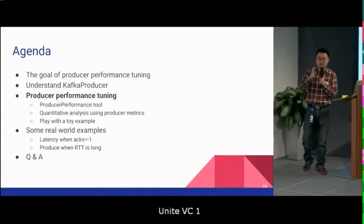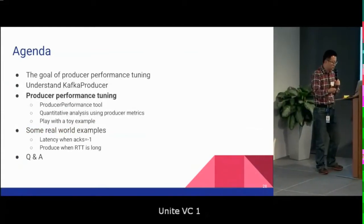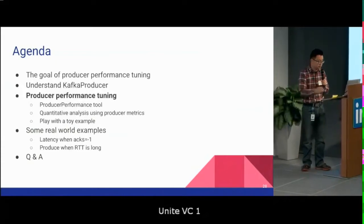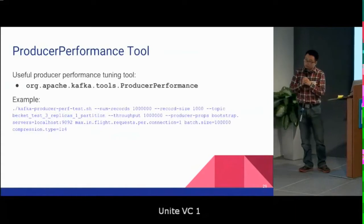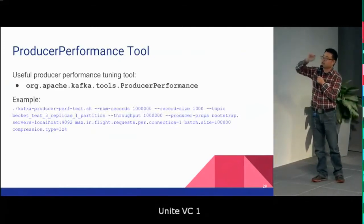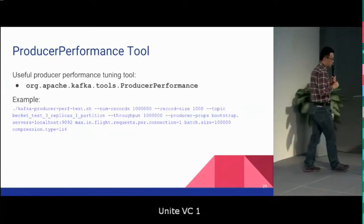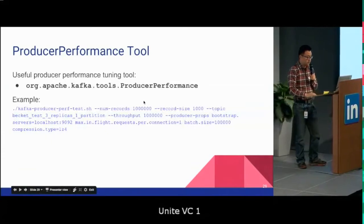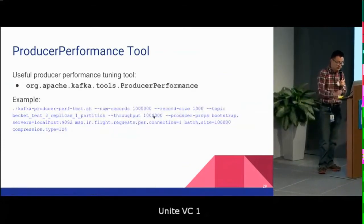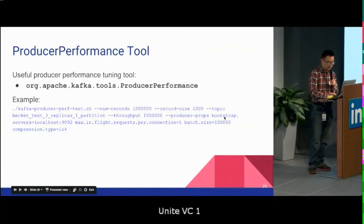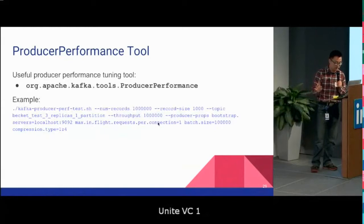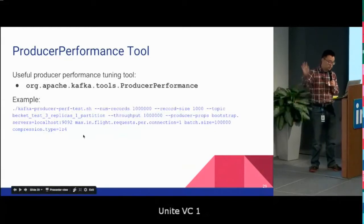Now let's look at the producer performance tuning tool — the producer performance class in open-source Kafka. You can specify the total number of records, record size, topic, throughput (messages per second), and other producer properties such as bootstrap server, max in-flight requests per connection, batch size, and compression type.